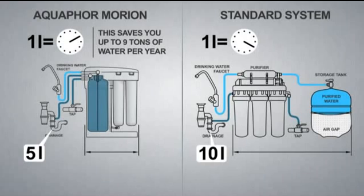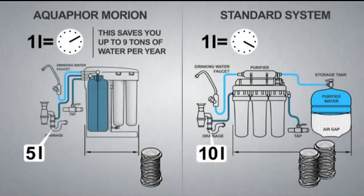Because the prefiltration unit operates with significantly lower volumes of water, the service life of the Aquaphor Morion membrane and filter modules is twice that of conventional systems, while maintenance costs are half as much. Aquaphor Morion works with lower water pressure. It requires only a minimum water pressure from the mains: 1.5 bars versus 3.5 bars for conventional systems.